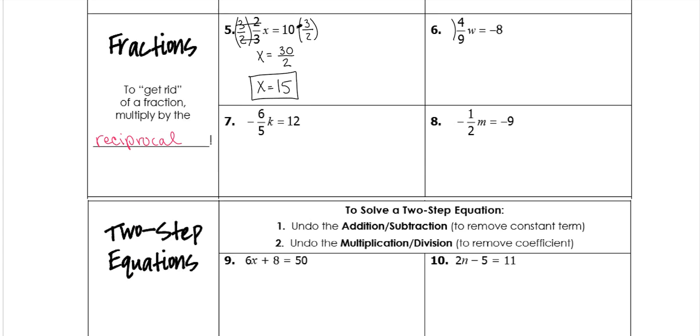Again, with 4 9ths, we're going to flip it. These cancel. Leaves us with just W. Negative 8 times 9 would be a negative 72. Divided by 4. And then negative 72 divided by 4 is negative 18. Feel free to use a calculator if it helps you. There should be links to various calculators you could use on Schoology or on our syllabus.